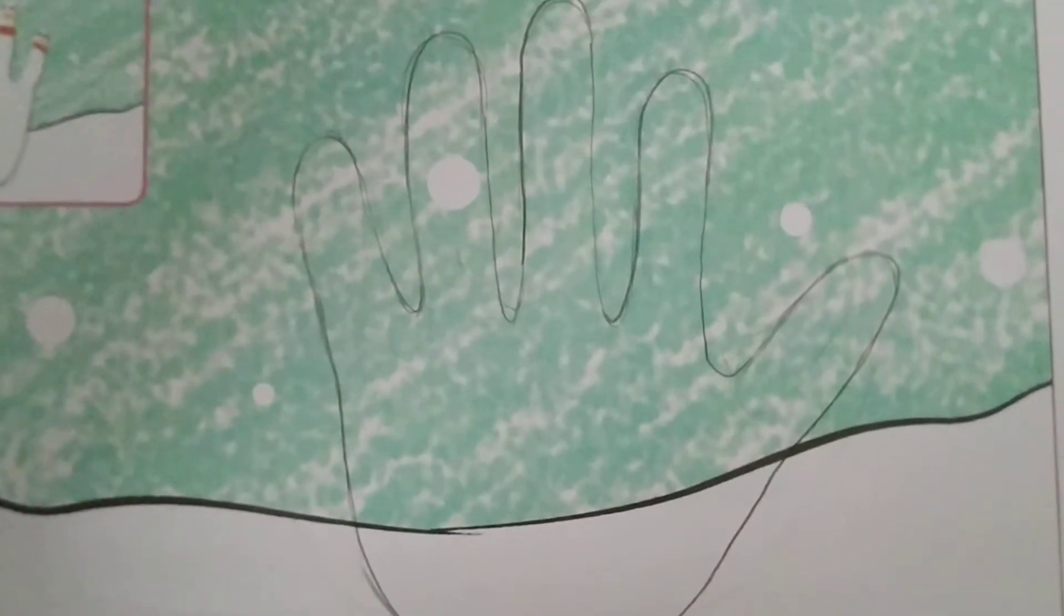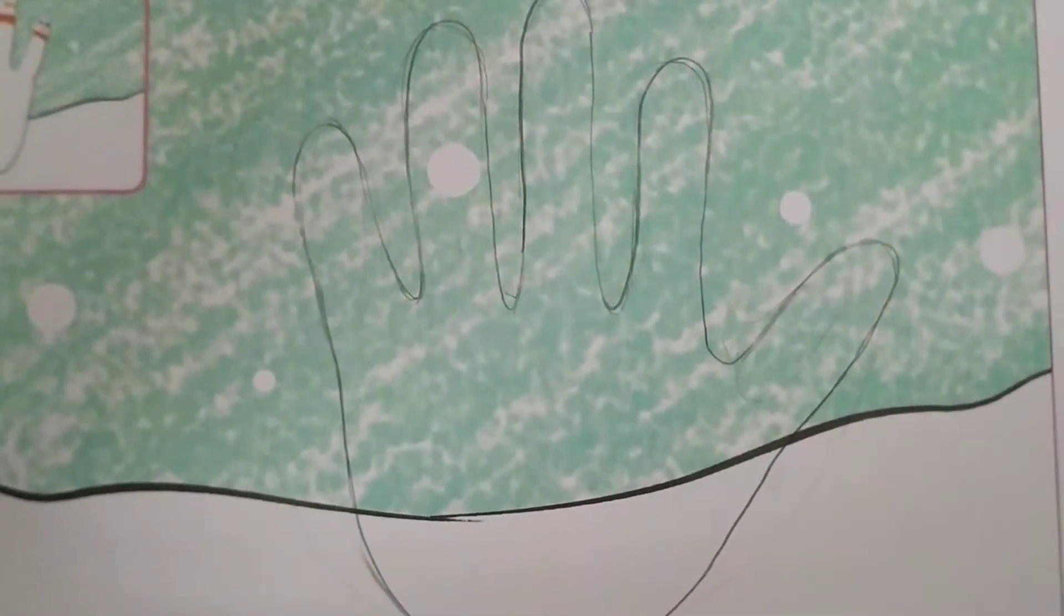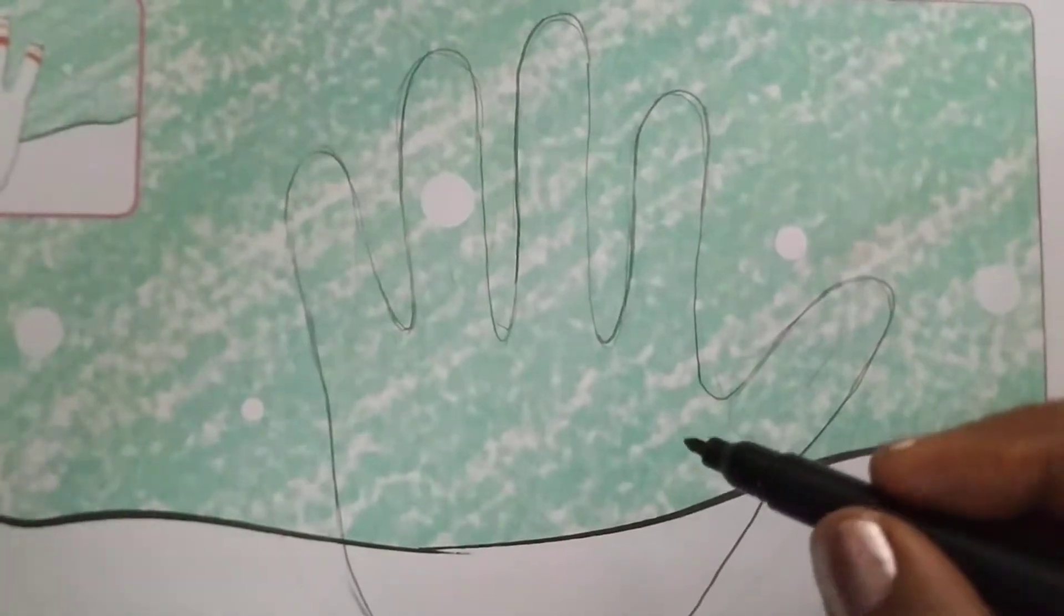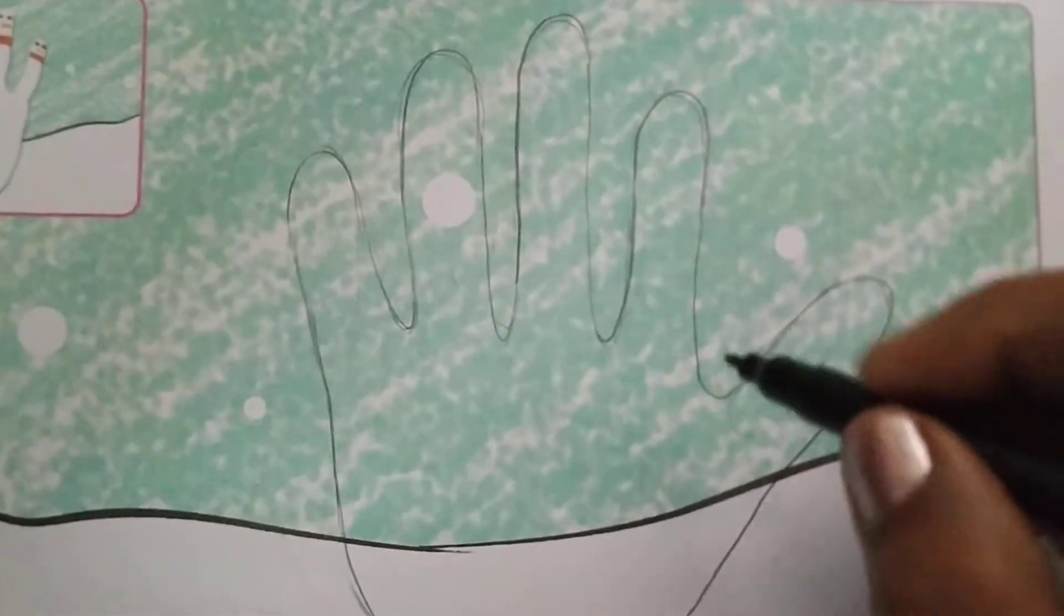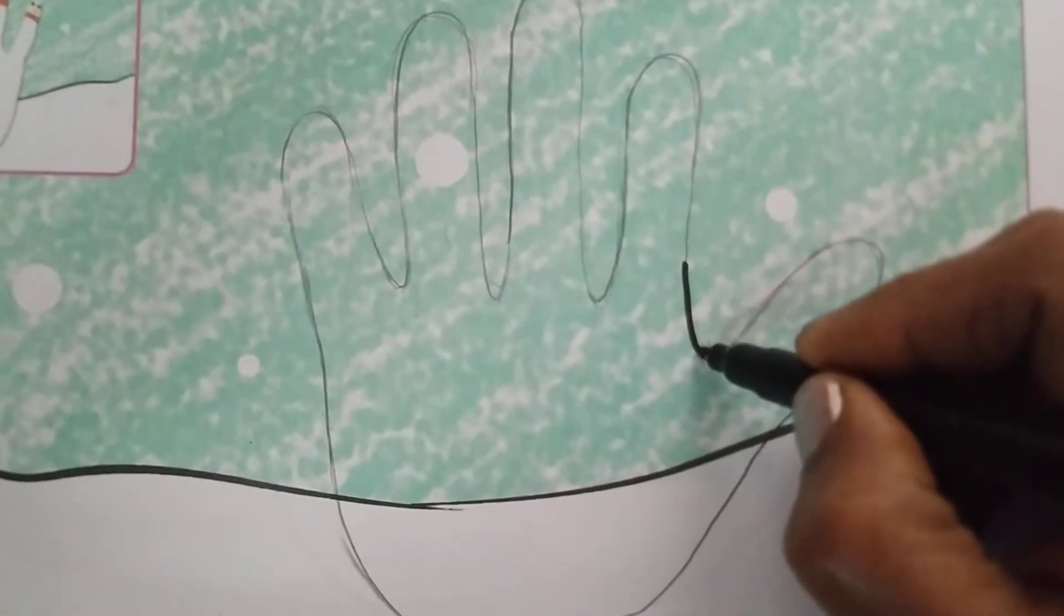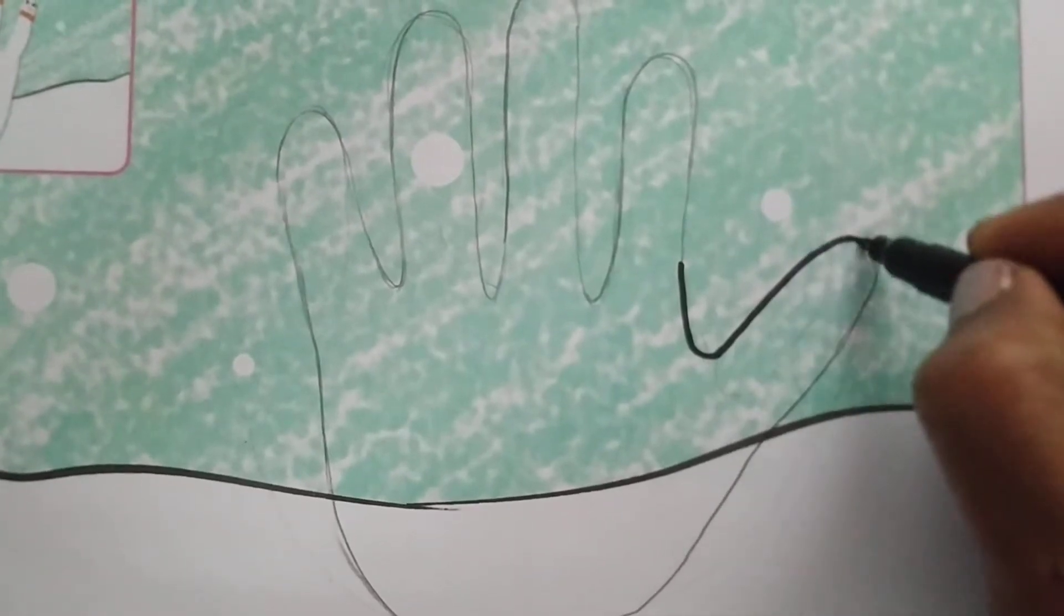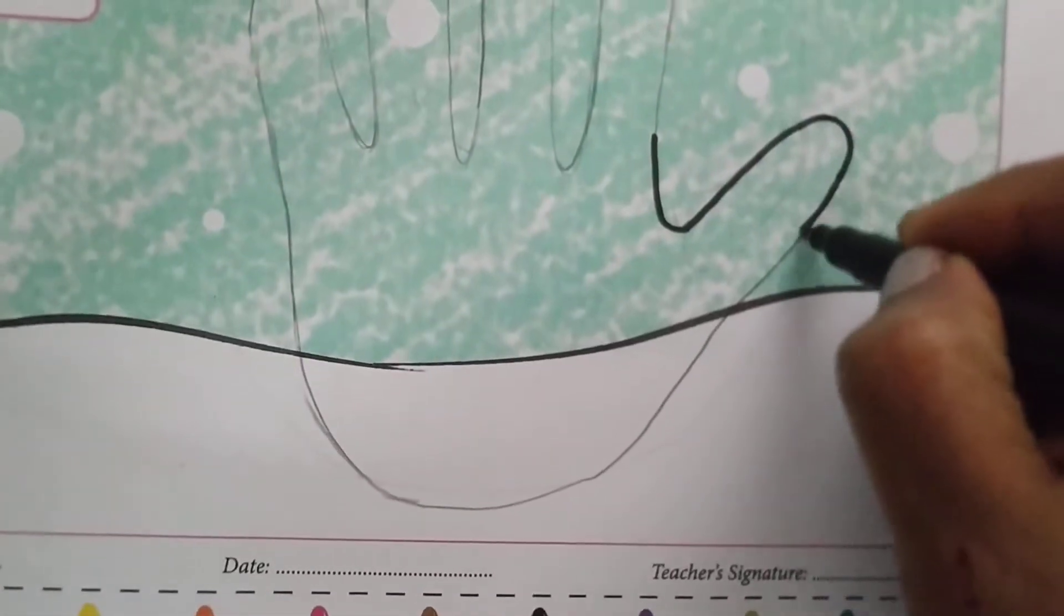Now you can see the impression of your hand is ready. What you have to do is take a black sketch pen and do the outline of your hand with the black sketch pen like this.